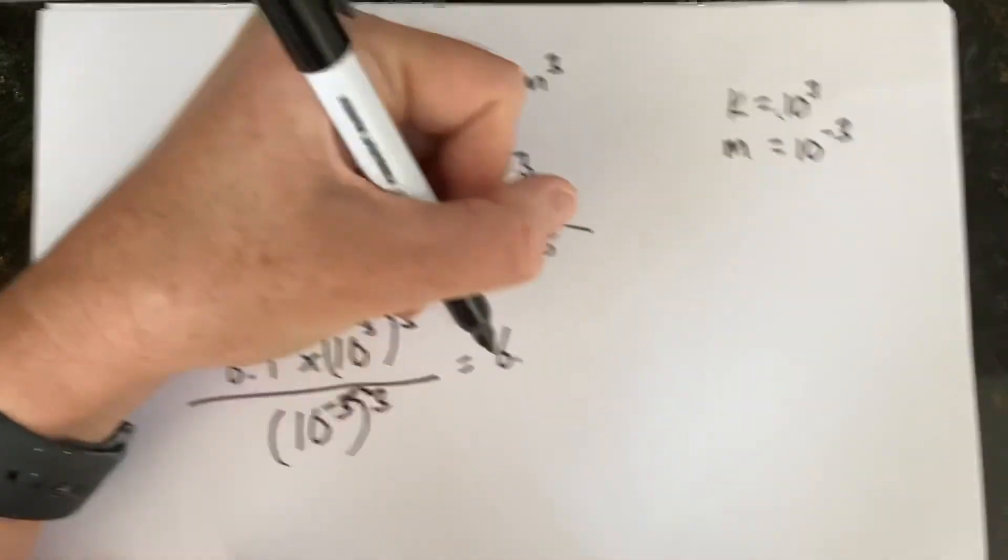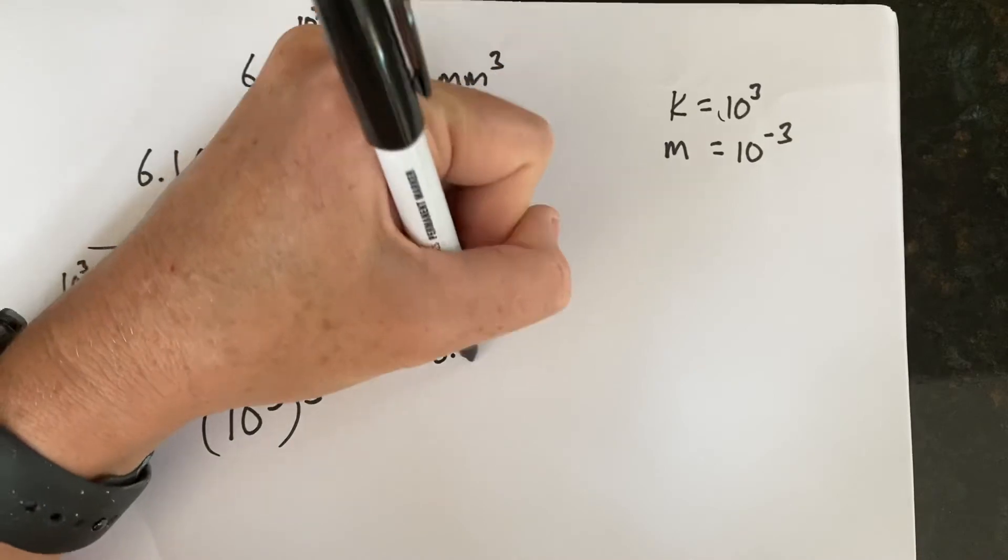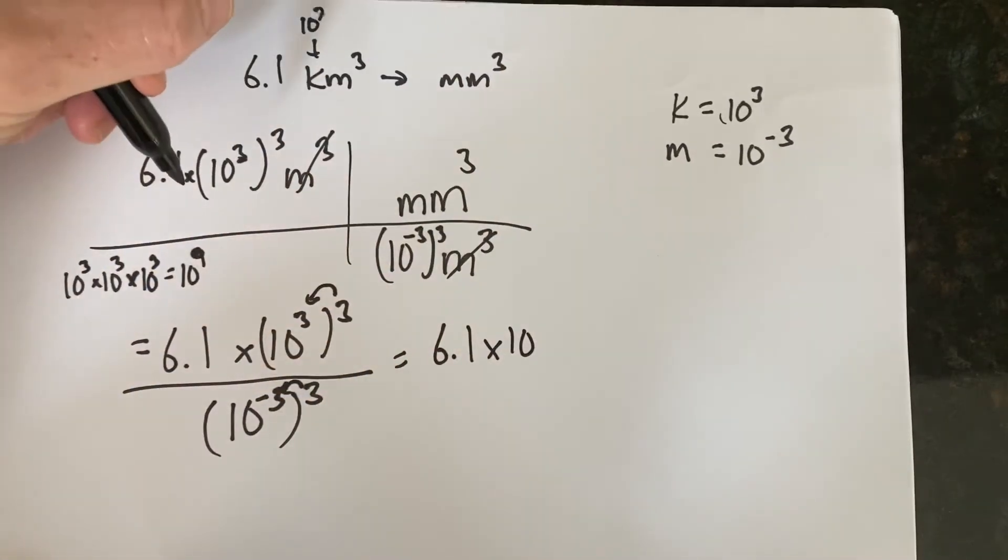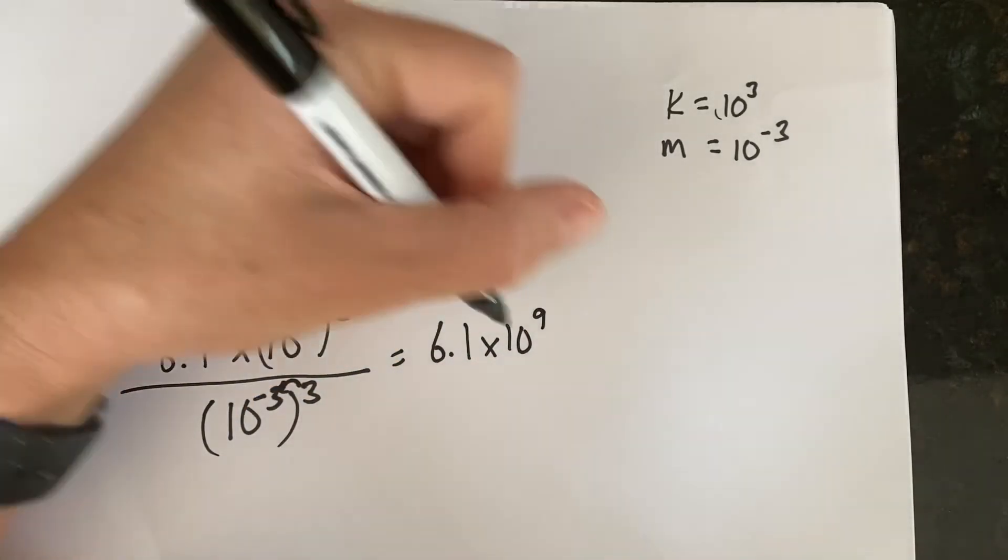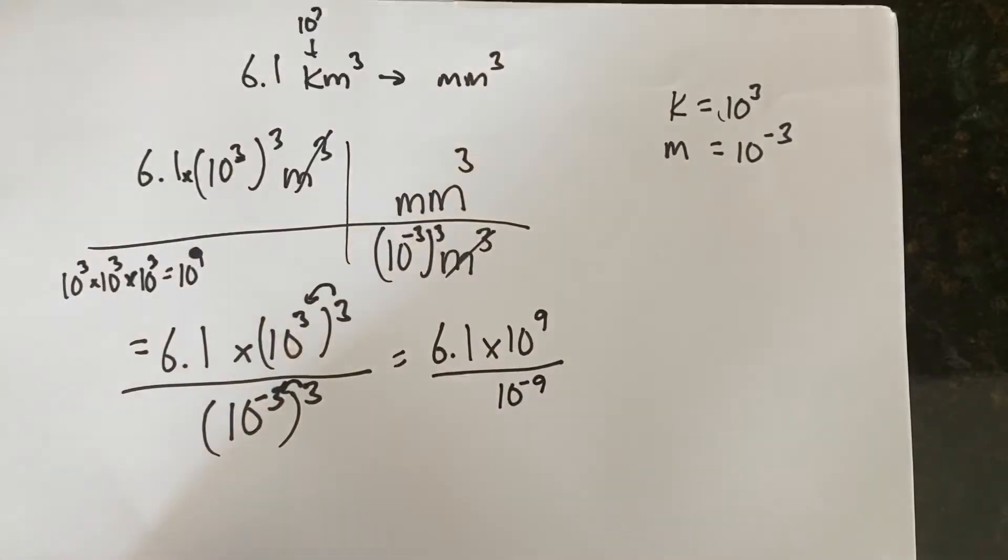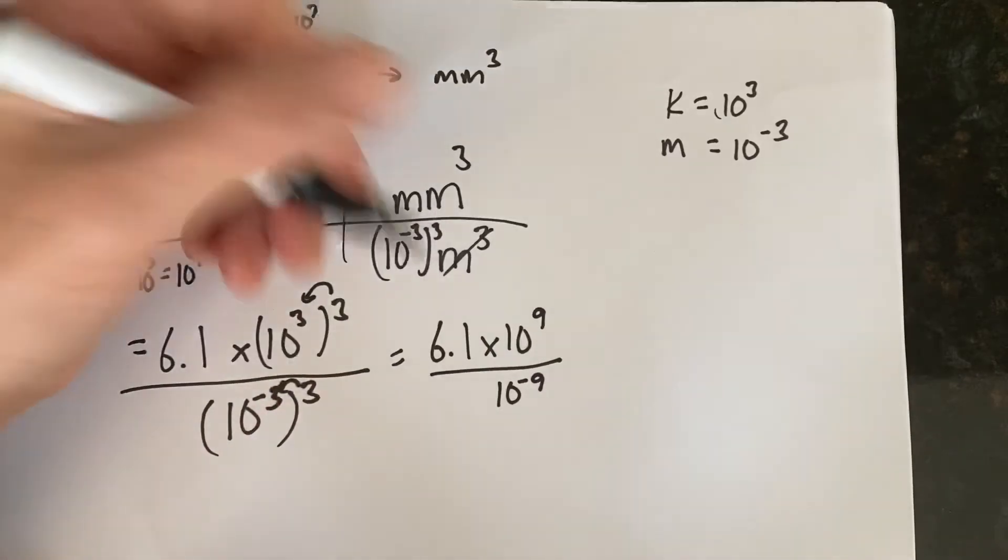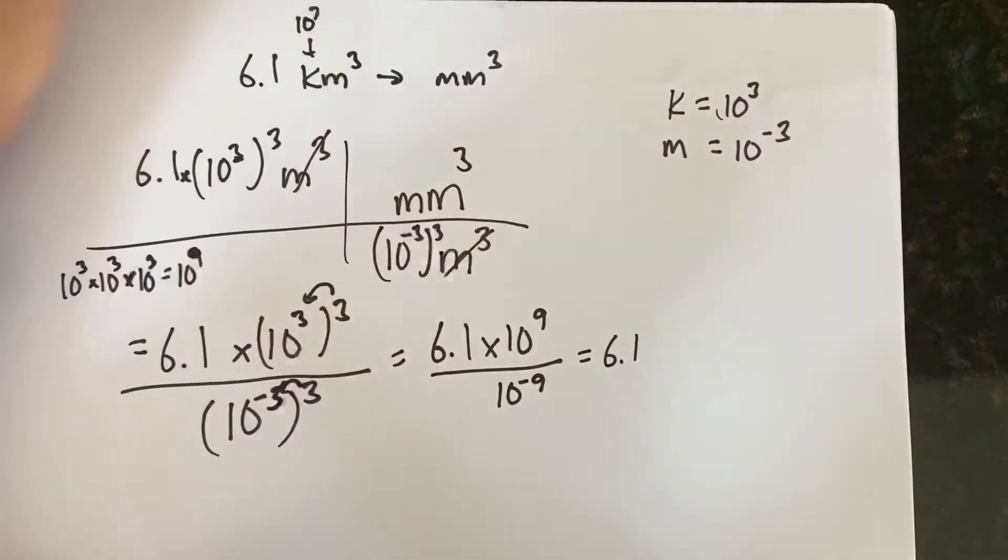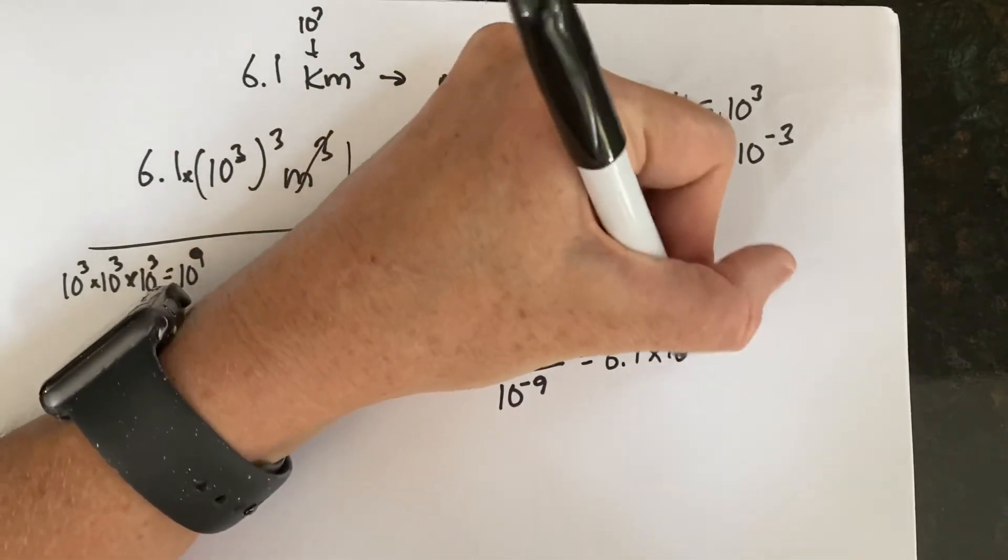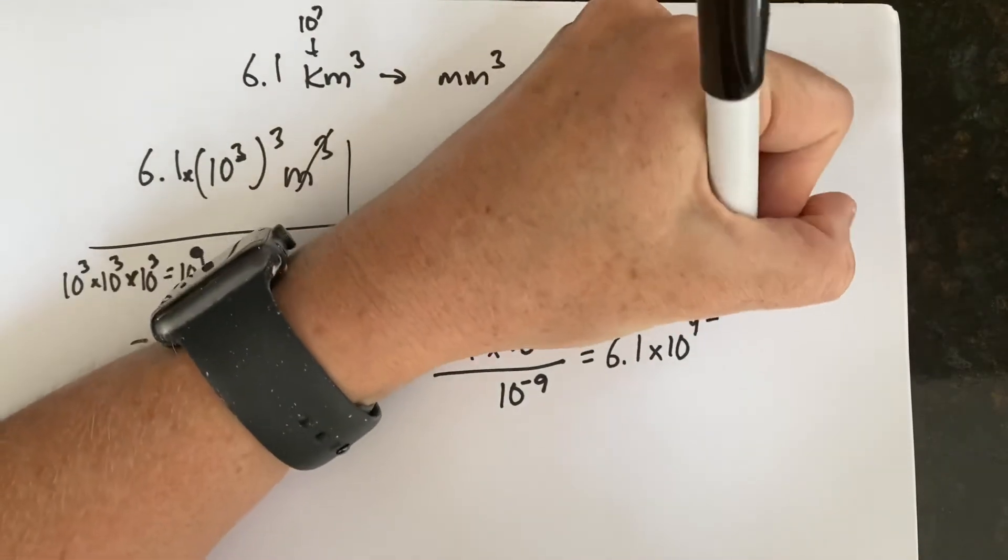So now let's go ahead and reduce it even further. We've got 6.1 times 10 to the 9, divided by 10 to the negative 9. And any time we divide, we subtract. So that gives us 6.1 times 10 to the 9, minus a negative 9.